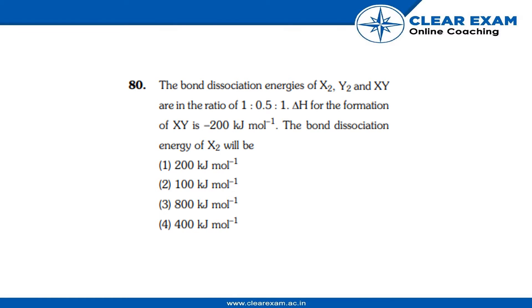The question given is: the bond dissociation energies of X₂, Y₂ and XY are in the ratio 1:0.5:1. ΔH for the formation of XY is -200 kJ mol⁻¹.